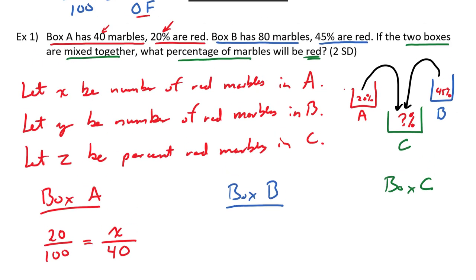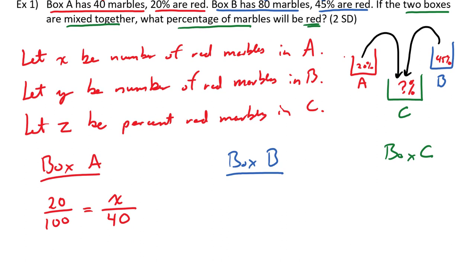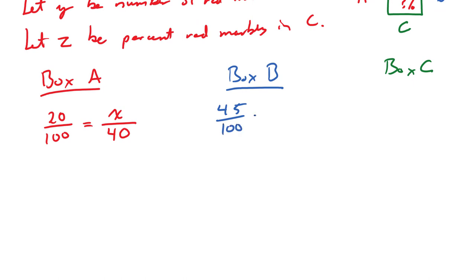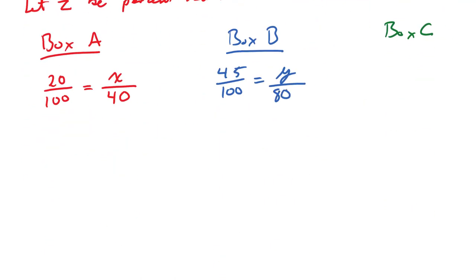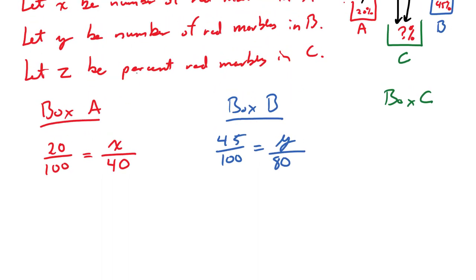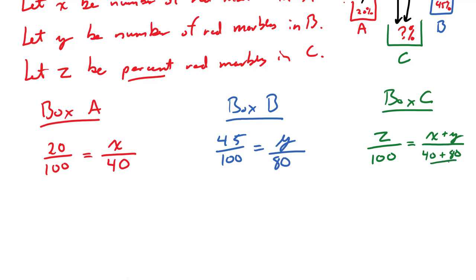Examining box B: we have 80 marbles and it's 45%. So 45/100 = Y/80. That's our second equation. Now for the third equation with Z: Z/100 will be the percentage of red marbles in the final box C. The numerator is X plus Y red marbles, and the denominator is 40 marbles from box A plus 80 marbles from box B. So Z/100 = (X + Y) / 120. I have three unknowns and three equations — I can now solve this.